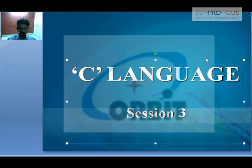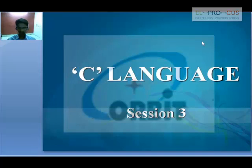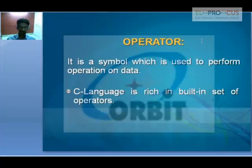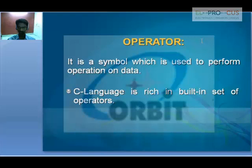Now we'll take up the third session, which is operators in C language. C language has many operators in it. An operator is a symbol which is used to perform operations on data. When you need to perform a certain kind of operation on any given data, we need to use different kinds of operators. C language is rich in its built-in set of operators.